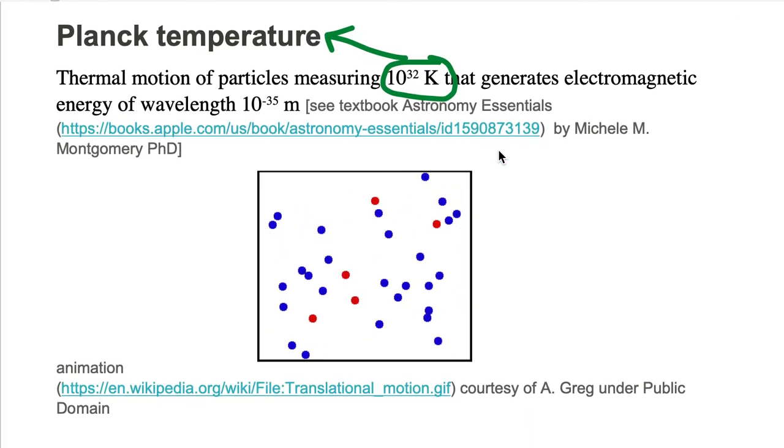Now temperature, in general, is a measurement of particle motions and collisions. At a high temperature of 10 to the 32 Kelvin, we have lots of particles moving very fast and colliding into one another. When they collide, they generate electromagnetic energy.